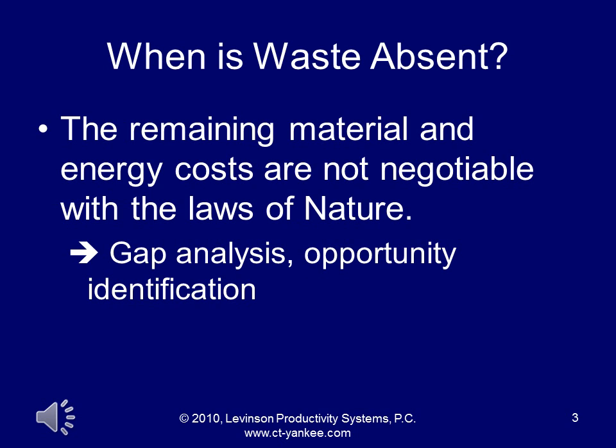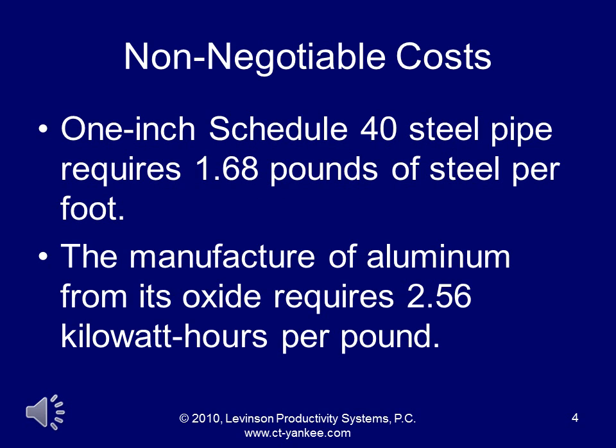The obvious question: when is waste absent? Waste is absent when the remaining material and energy costs are not negotiable with the laws of nature. Examples of non-negotiable costs: one-inch schedule 40 steel pipe requires 1.68 pounds of steel per square foot — there's no way to make it with less. The manufacture of aluminum from its ore requires 2.56 kilowatt-hours per pound. Those are costs not negotiable with the laws of nature.